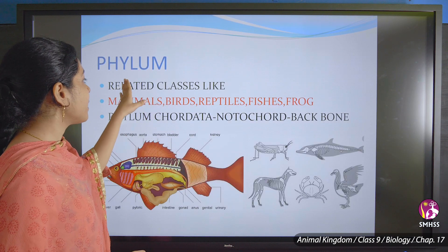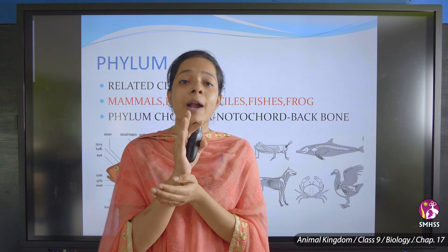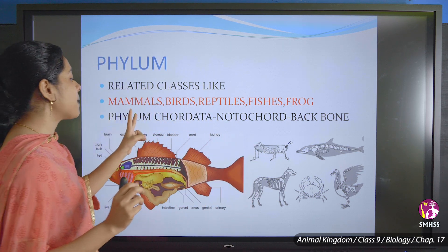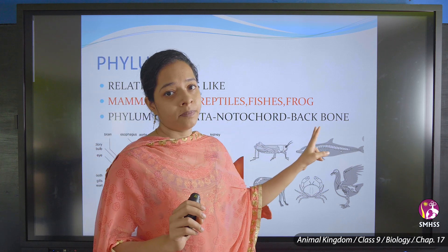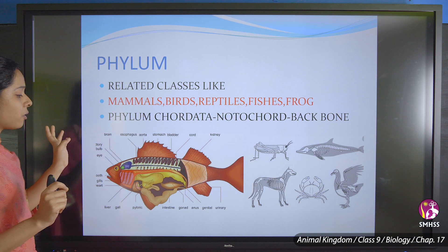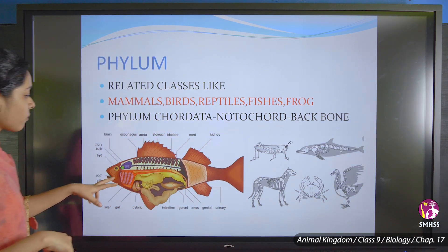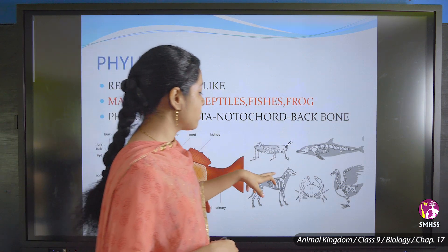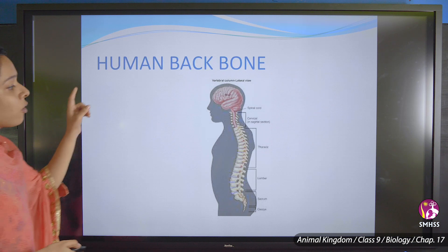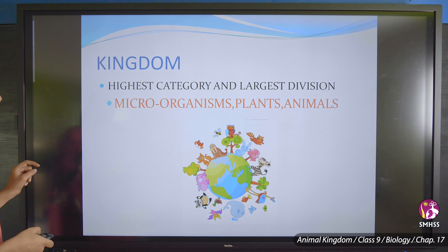The next category is Phylum, which deals with related classes. Phylum is classified based on the presence or absence of a notochord. Notochord is the backbone. Animals possessing the notochord include fish — you can see the backbone when you eat a fish — as well as goats, dogs, and humans.